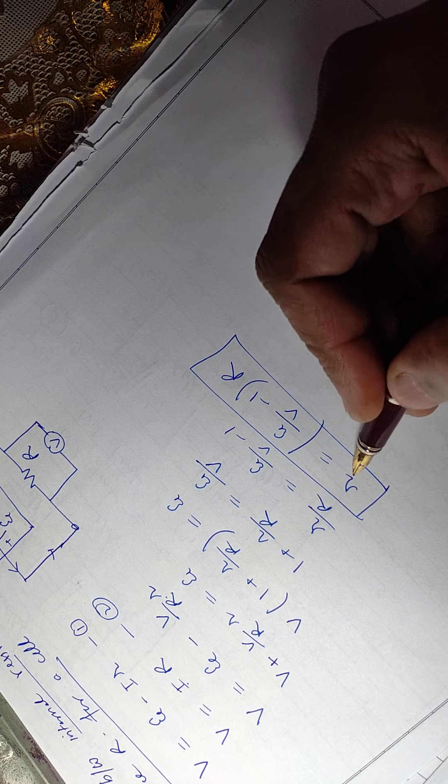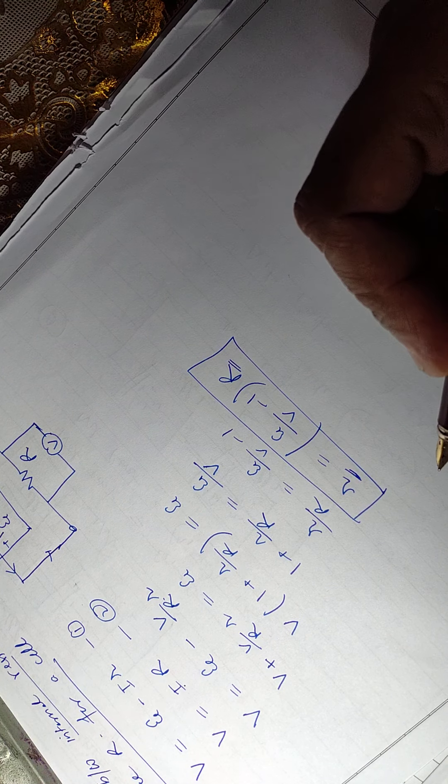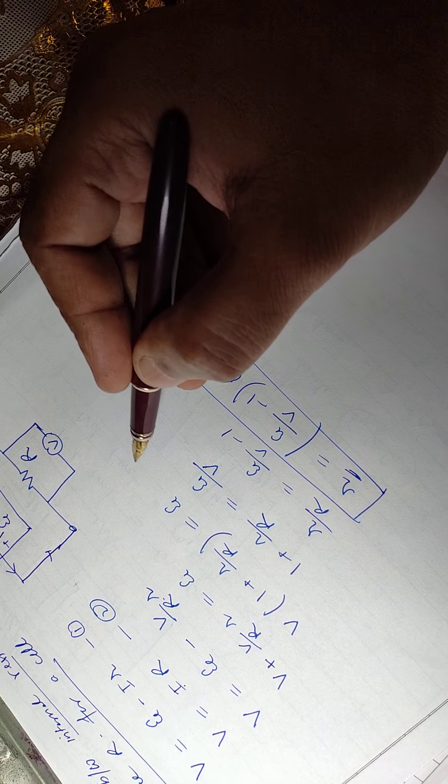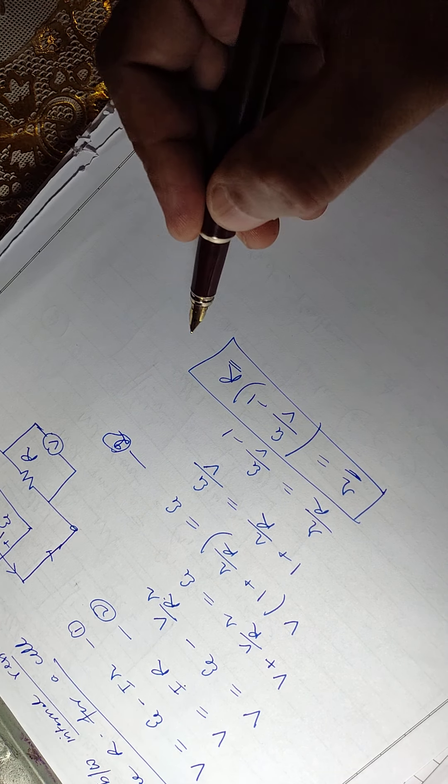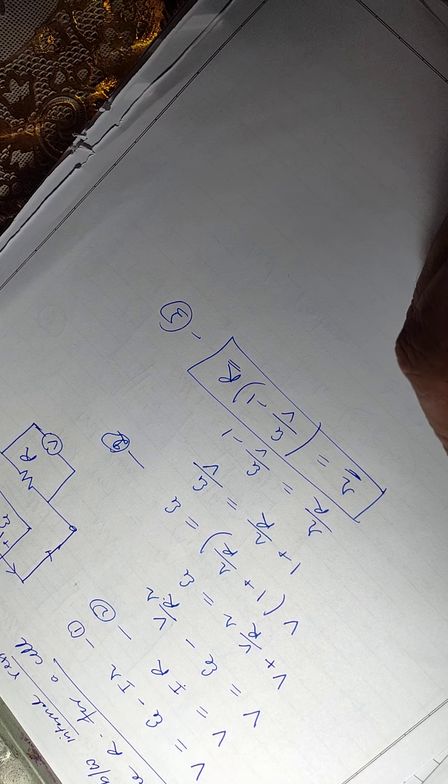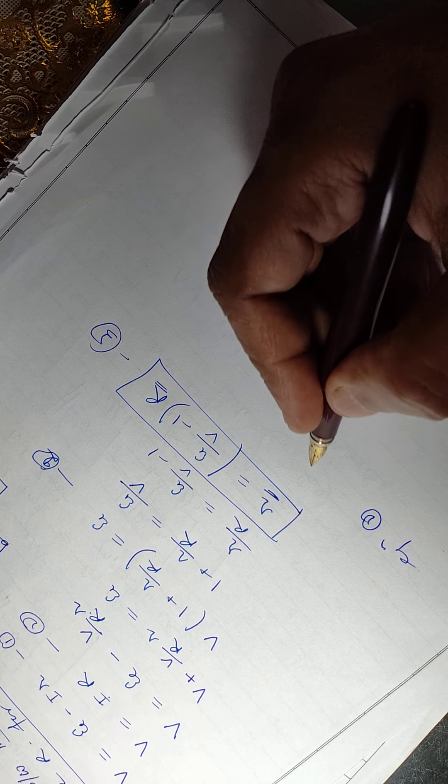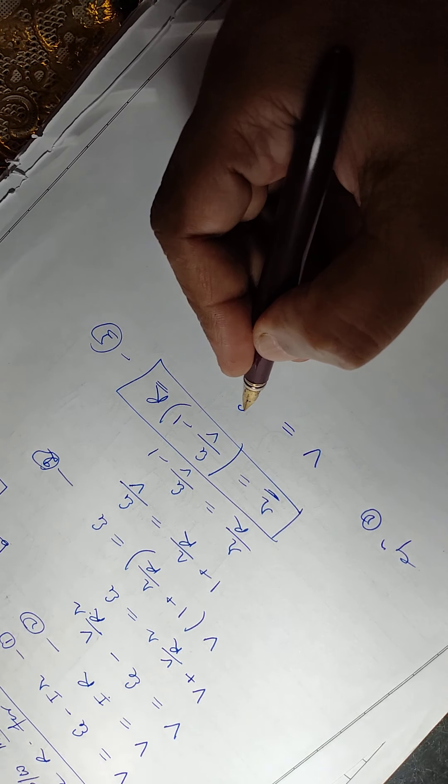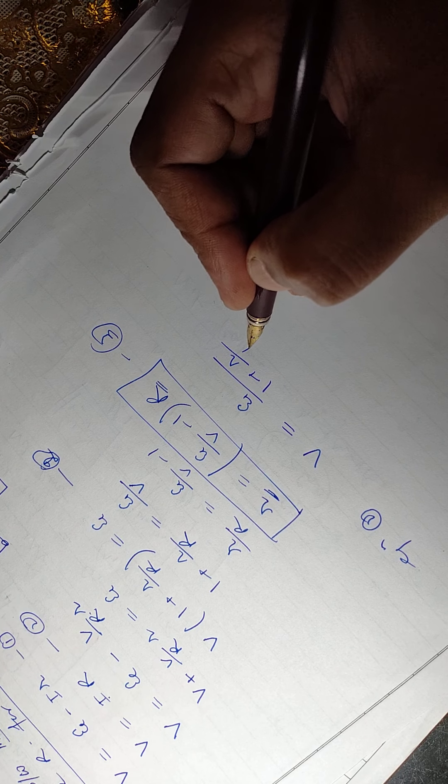This is a very important relation between internal resistance small r and external resistance capital R. Now one thing is very important we must understand here. I'm calling this equation 2 and this one is equation 3. So I recall equation 2 again. I can write V equals xi by 1 plus r by R.